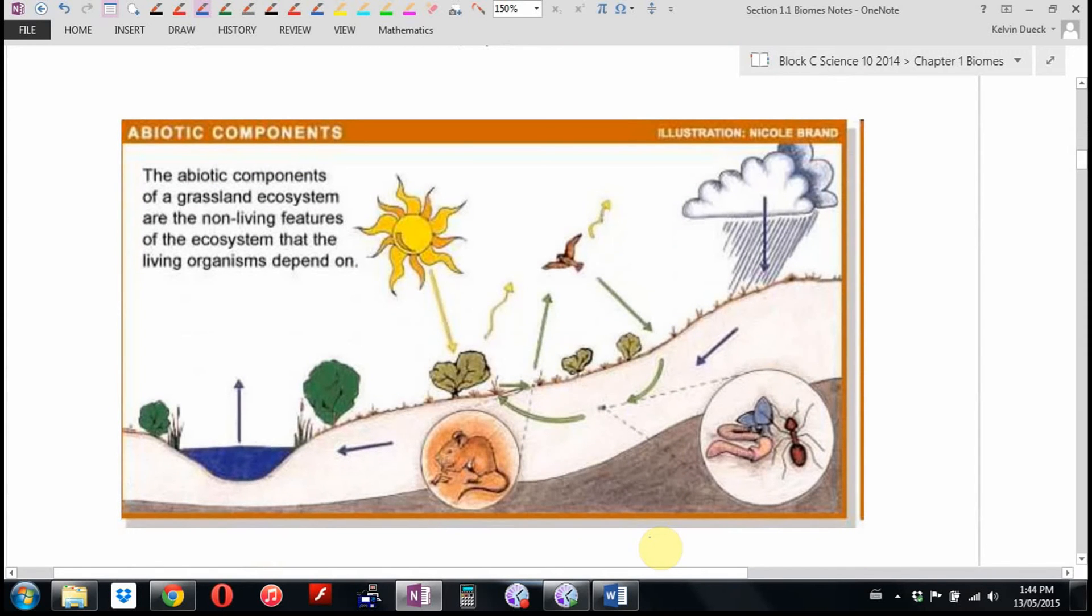Here are some examples of non-living or abiotic components of a biome. So the abiotic components of a grassland ecosystem are the non-living features of the ecosystem that the living organisms depend on. Sunlight, for example. Precipitation. Where and how the water is distributed. Even the slope of the land might affect how the water runs off, whether it's able to gather into lakes or whether it just runs downhill and leaves that area.